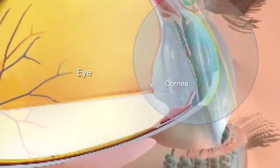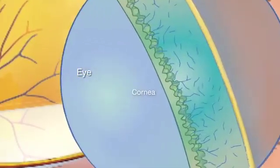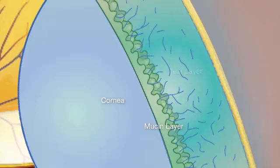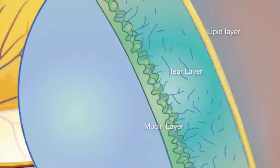Evaporative dry eye is caused by an unstable tear film. The tear film is made up of three layers: a thin inner mucin layer which provides lubrication, a very thick middle layer made up of tears, and a thin outer oily layer made up of lipids, which keeps the tear layer from evaporating.